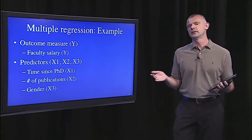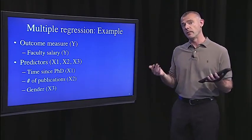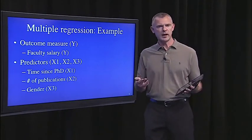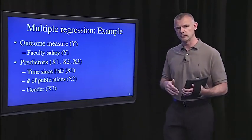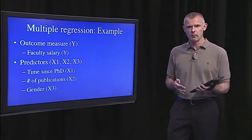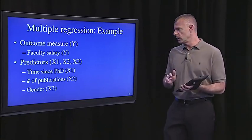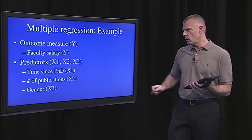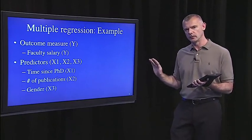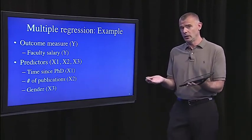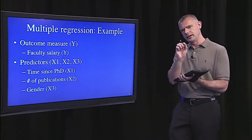The predictors are: how long since the faculty member received their PhD — you'd expect a positive correlation with salary — the number of publications a faculty member has, since prolific professors tend to be more marketable and make more money, and we'll also look at a gender effect. We can look at male and female faculty members and see if there's a difference in their salary while taking into account time since their PhD and number of publications.